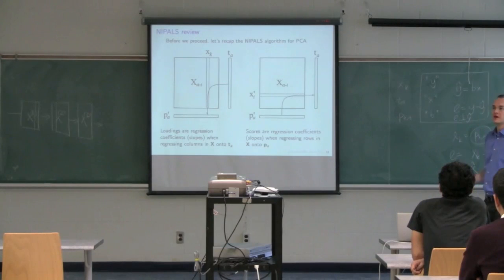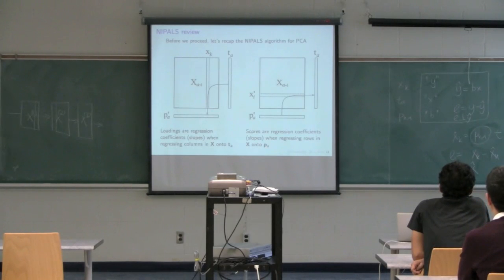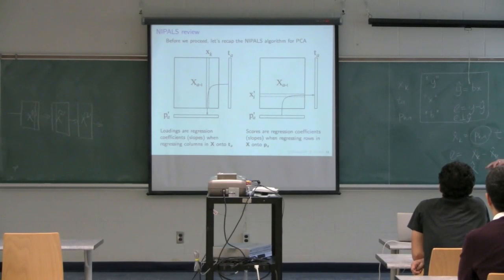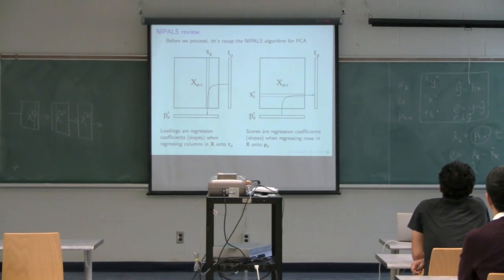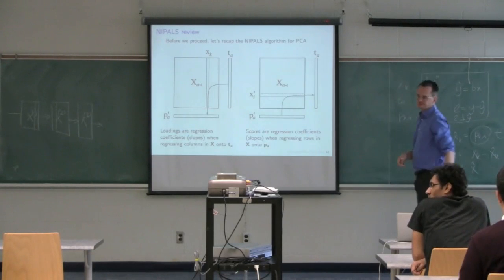A student asks for clarification on the diagram. The instructor clarifies that the two diagrams represent the two alternating least-squares regressions in NIPALS — the one on the left is the first regression and the one on the right is the second, where the roles of T and P interchange.